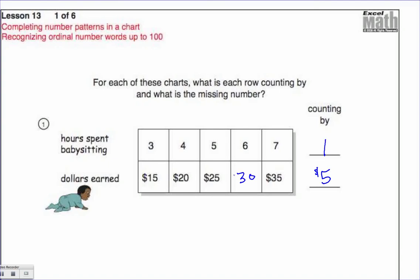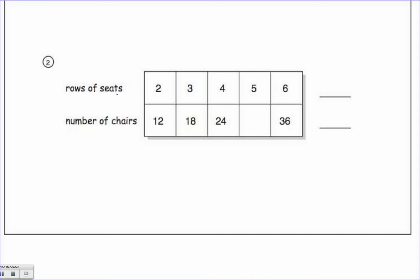Let's keep going. Go ahead and pause the video, try this one here. Remember, fill in what it's counting by and the missing number. Okay, two, three, four, five, six - that's counting by one. 12, 18, 24, blank, 36 is counting by six. The missing number would be 30.